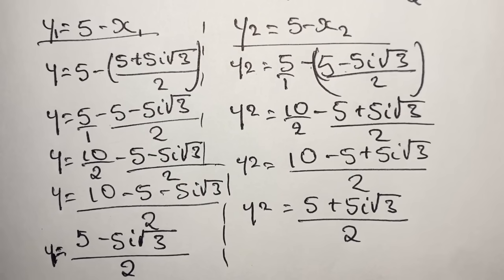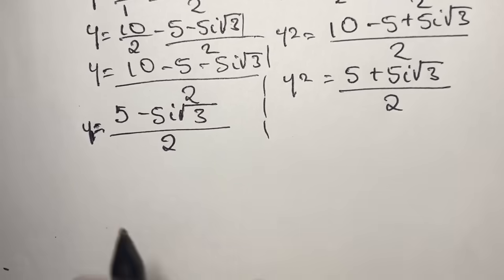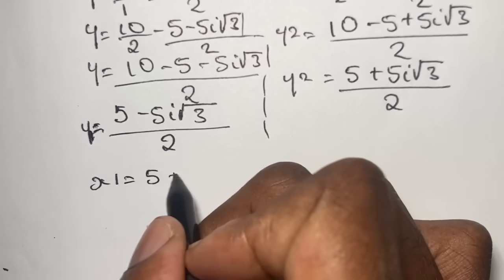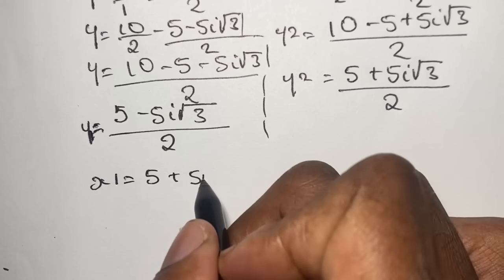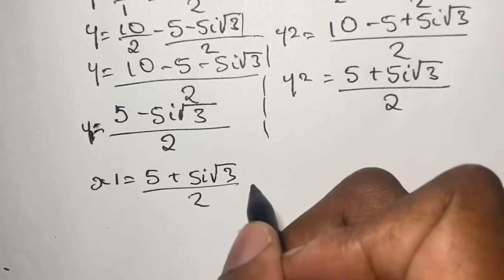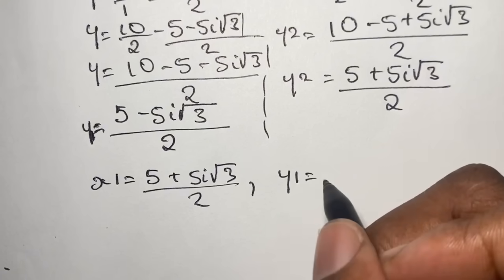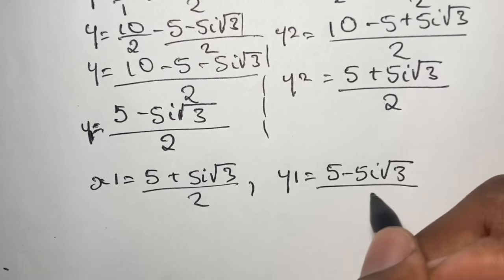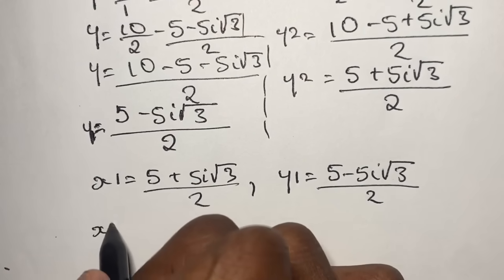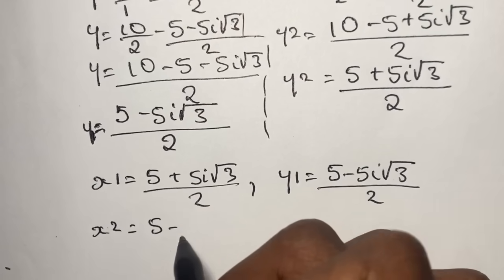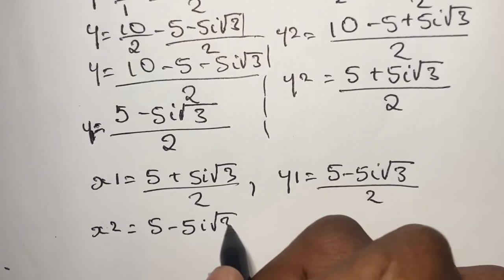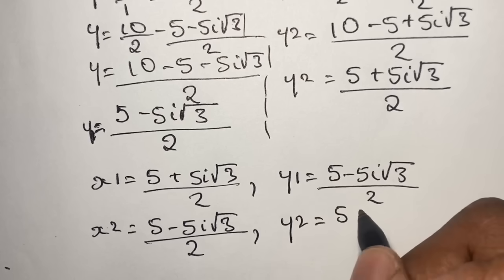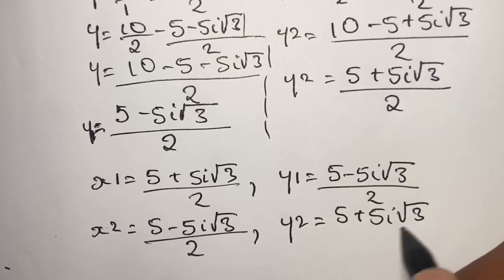We now have our solutions. The first pair is: x₁ equals 5 plus 5i times the square root of 3 over 2, and y₁ equals 5 minus 5i times the square root of 3 over 2. The second pair is: x₂ equals 5 minus 5i times the square root of 3 over 2, and y₂ equals 5 plus 5i times the square root of 3 over 2.